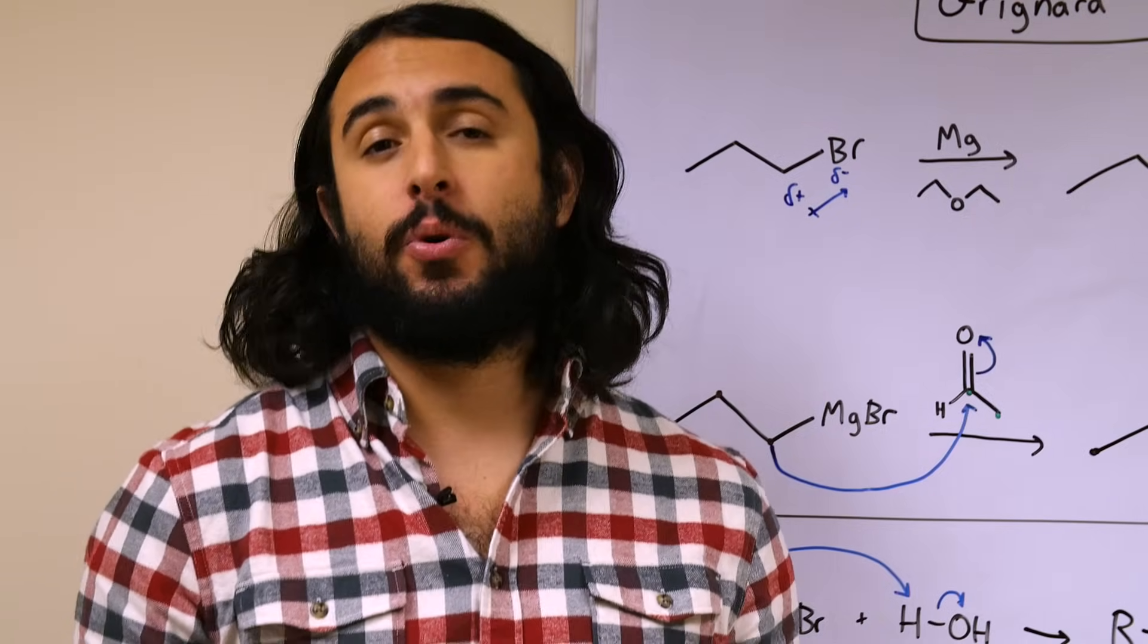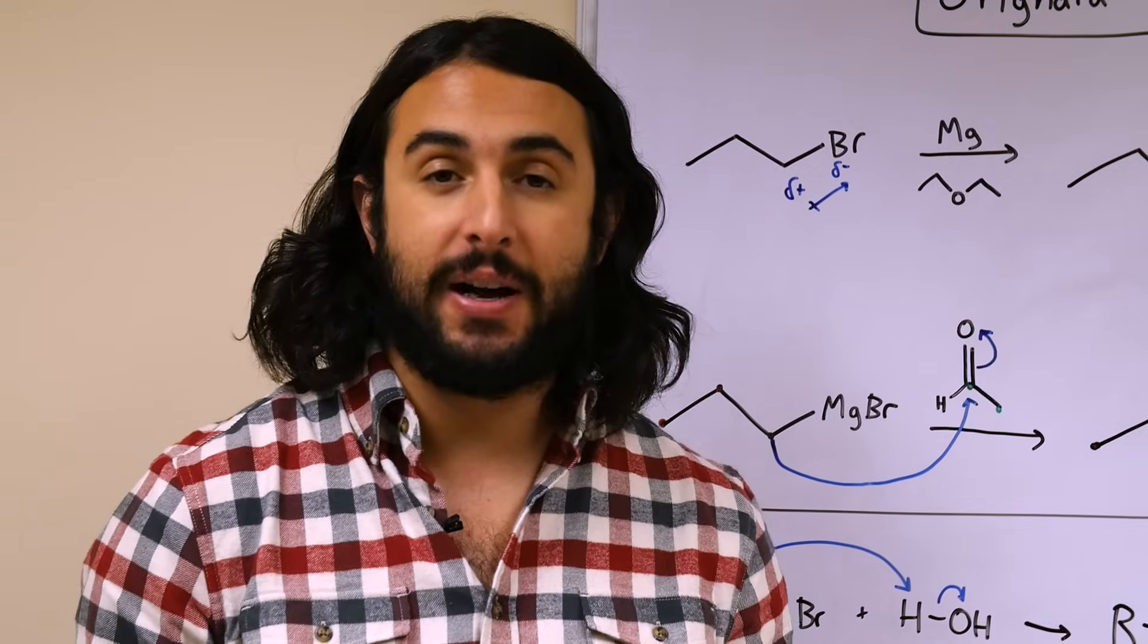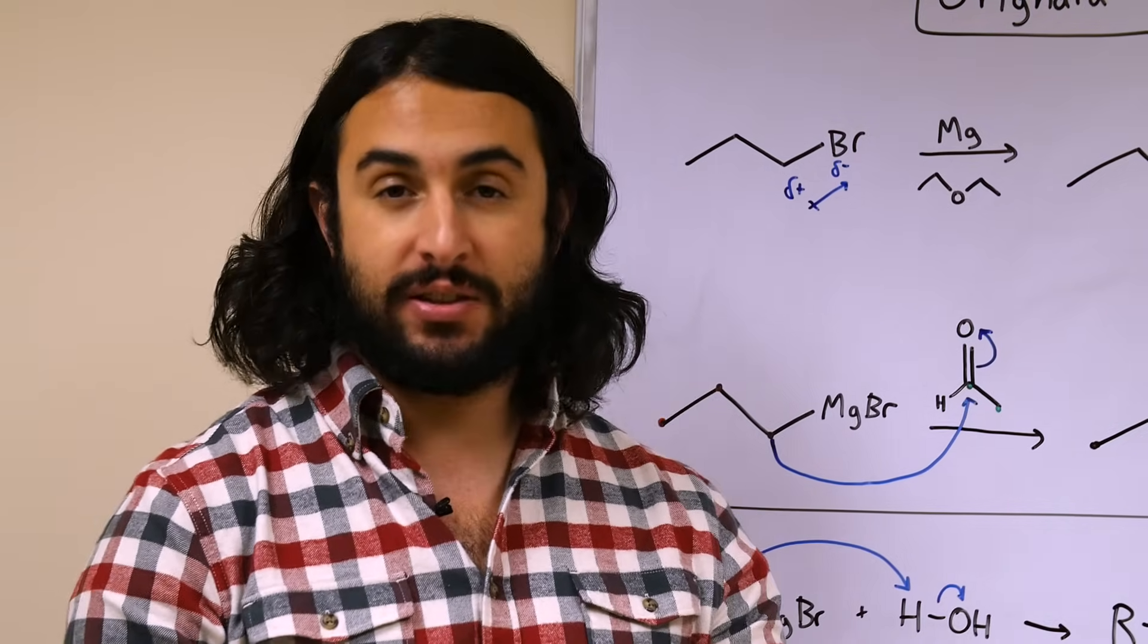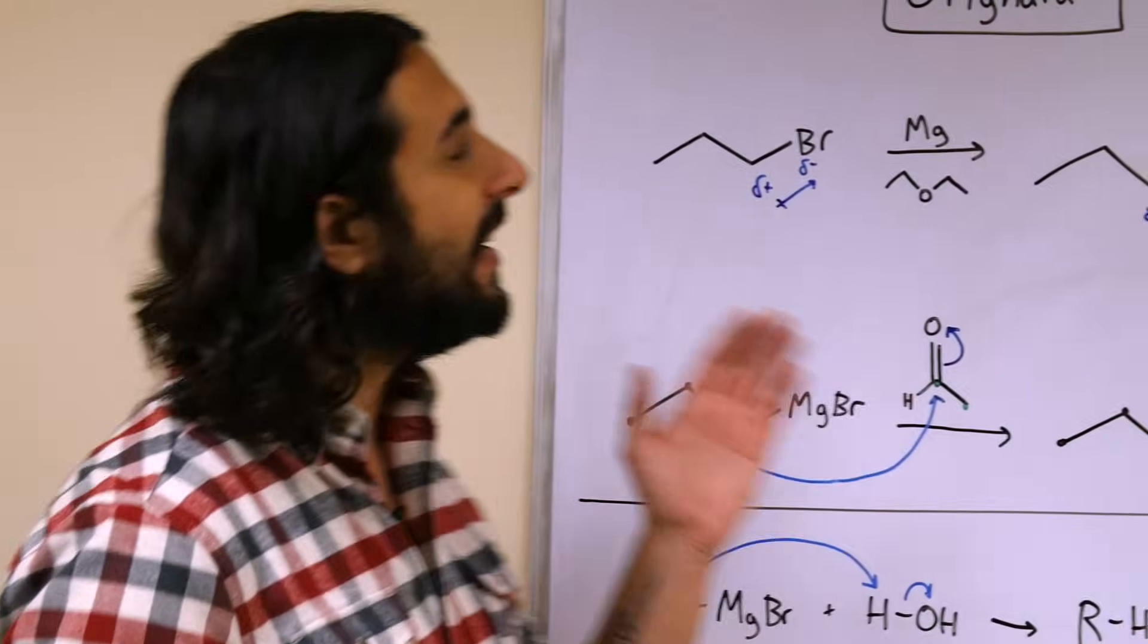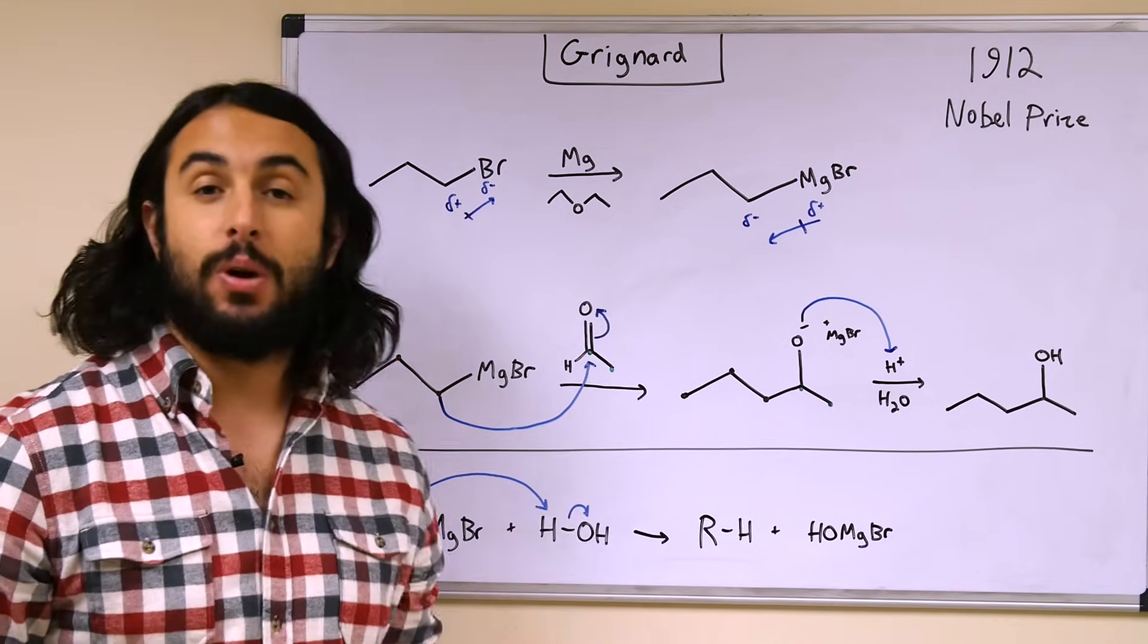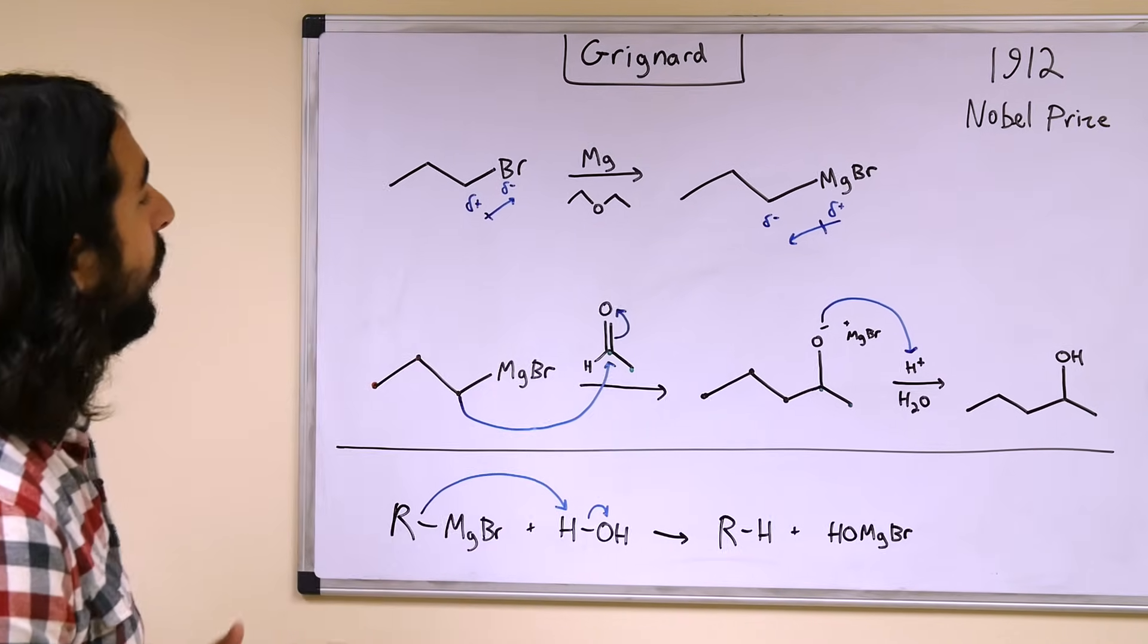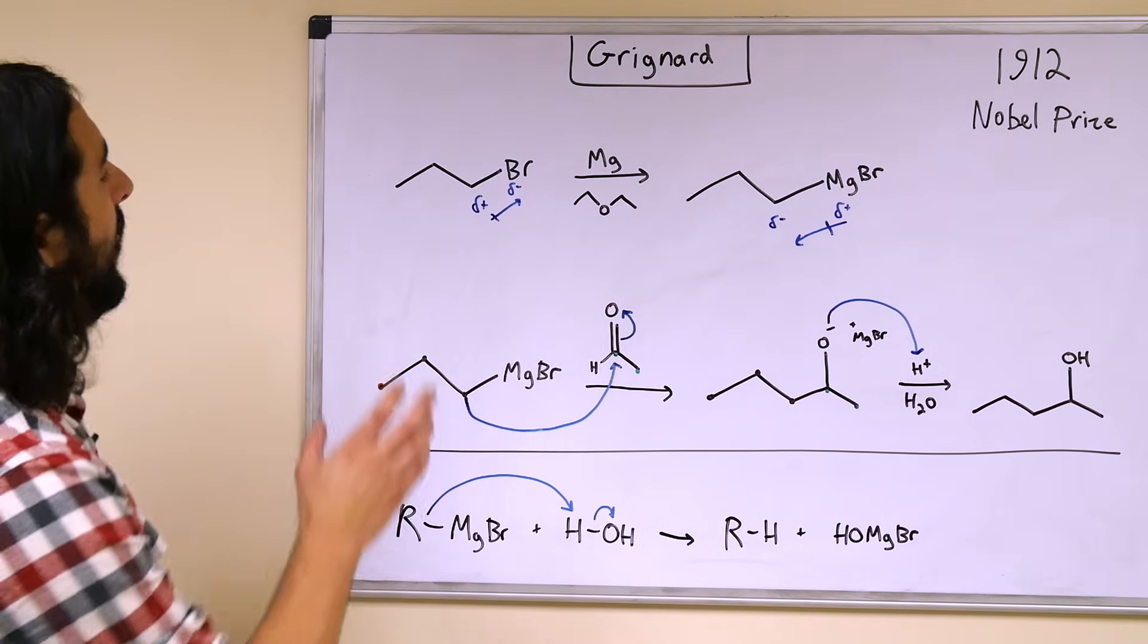As I said before, it's very important for us to develop techniques in which we can generate new carbon-carbon bonds. Now nature has its own ways of doing this, but there are some that we have invented all on our own. So let's take a look at one called the Grignard reaction that was developed in 1912 and won the Nobel Prize because this is a very important reaction that we use quite a bit today.